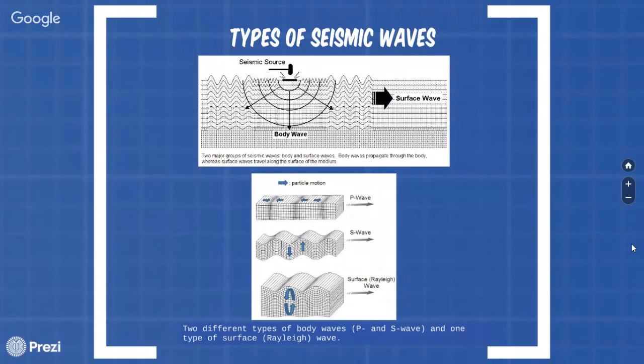Seismic body wave include two different types according to the relative direction of disturbance, with respect to direction of propagation, primary and secondary wave. Seismic Survey wave also includes several different types, the Rayleigh wave being one.